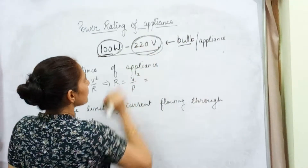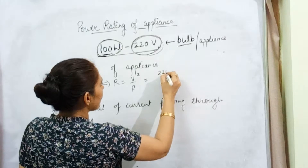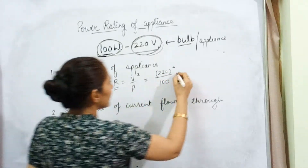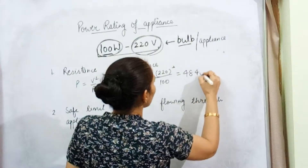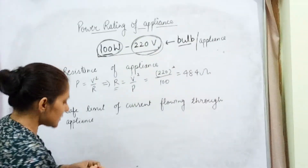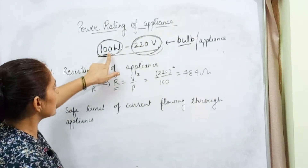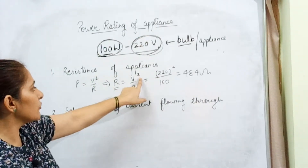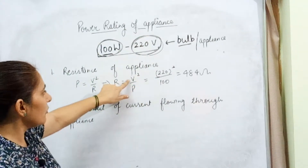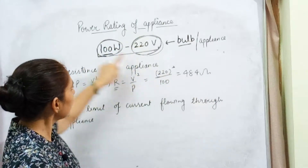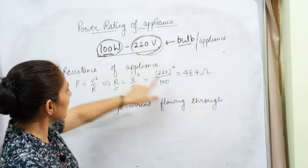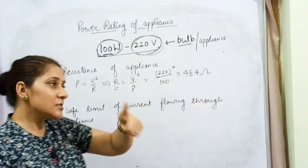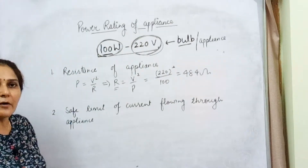That means: potential difference is 220, so resistance is 220 squared divided by 100, which gives 484 ohm. The resistance for the appliance whose power rating is 100 watt and 220 volt is given by this formula — R = V²/P. Put the value of potential difference and power, and we get the resistance of this appliance. This is the first thing we can calculate with the help of the power rating.